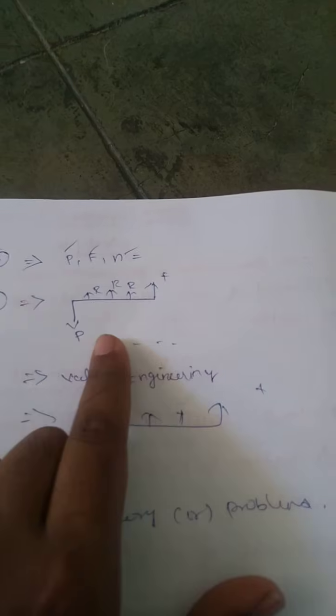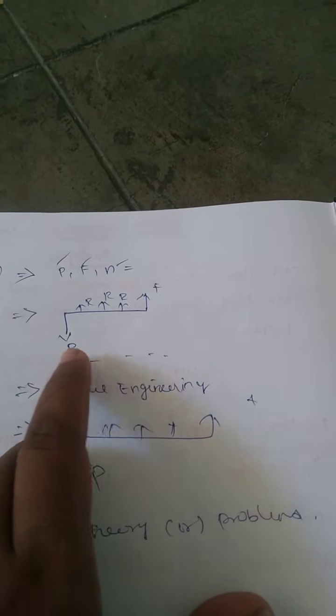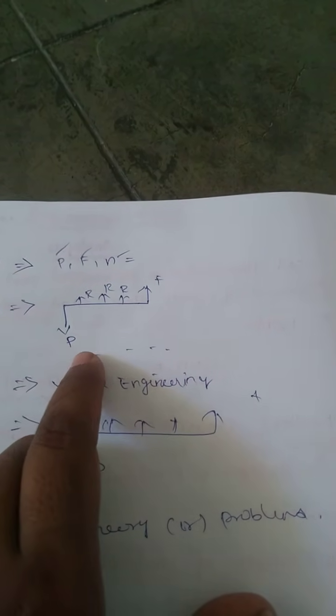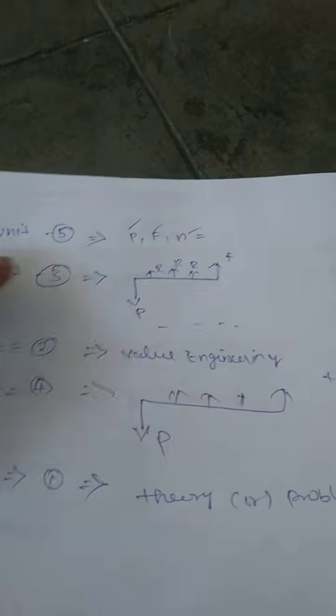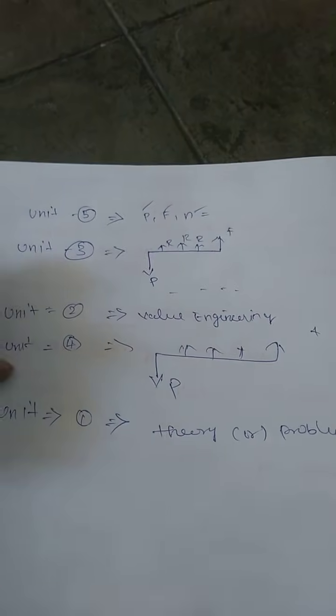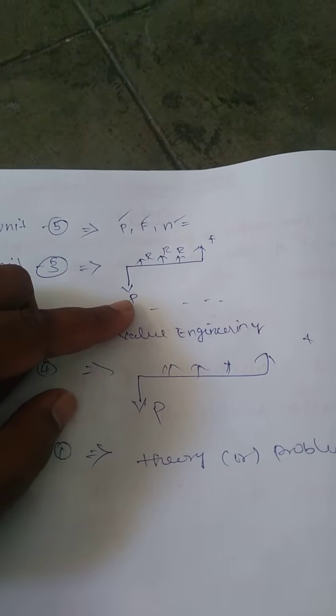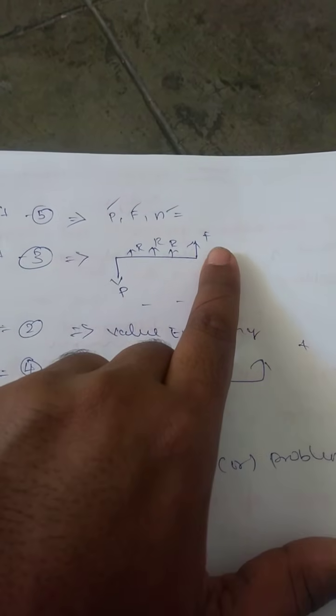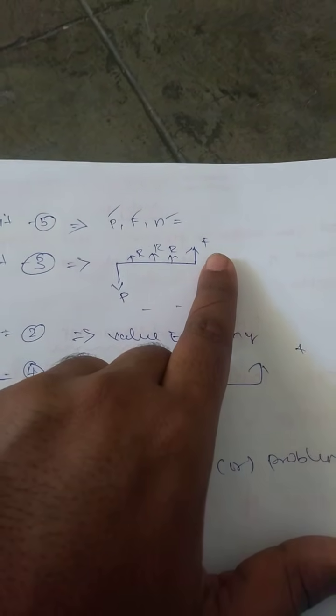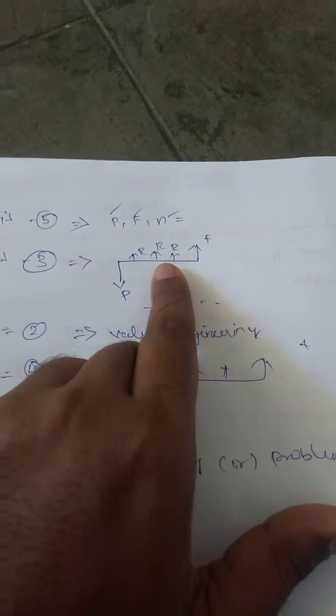Future worth method and annual equal method — what is the concept? There is a diagram. You can pass the maximum. Three units are the same, four units are the same, three units are the same. B is the purchasing cost, F is the maintenance cost, R is the number of years.